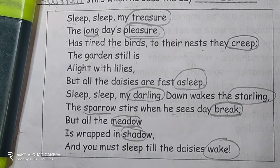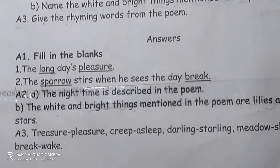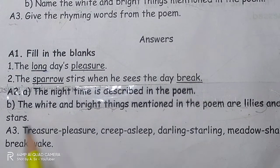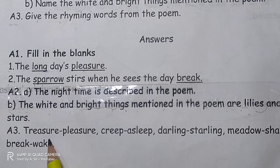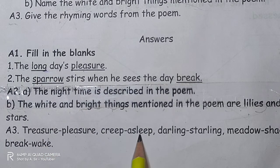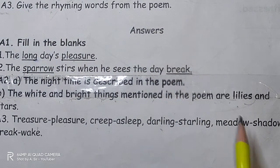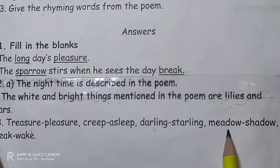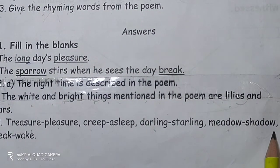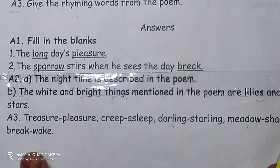So once again, let's check the answers for A3. The rhyming word pairs are: pair one — treasure and pleasure; pair two — creep and asleep; pair three — darling and starling; pair four — meadow and shadow; and pair five — break and wake. These are the five rhyming word pairs from the poem.